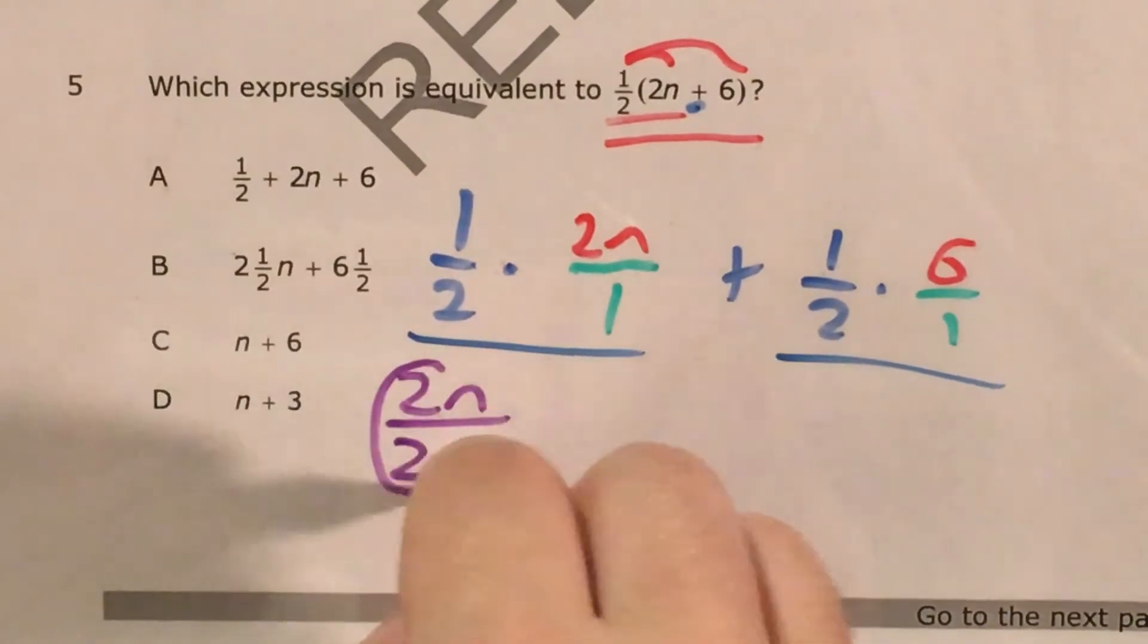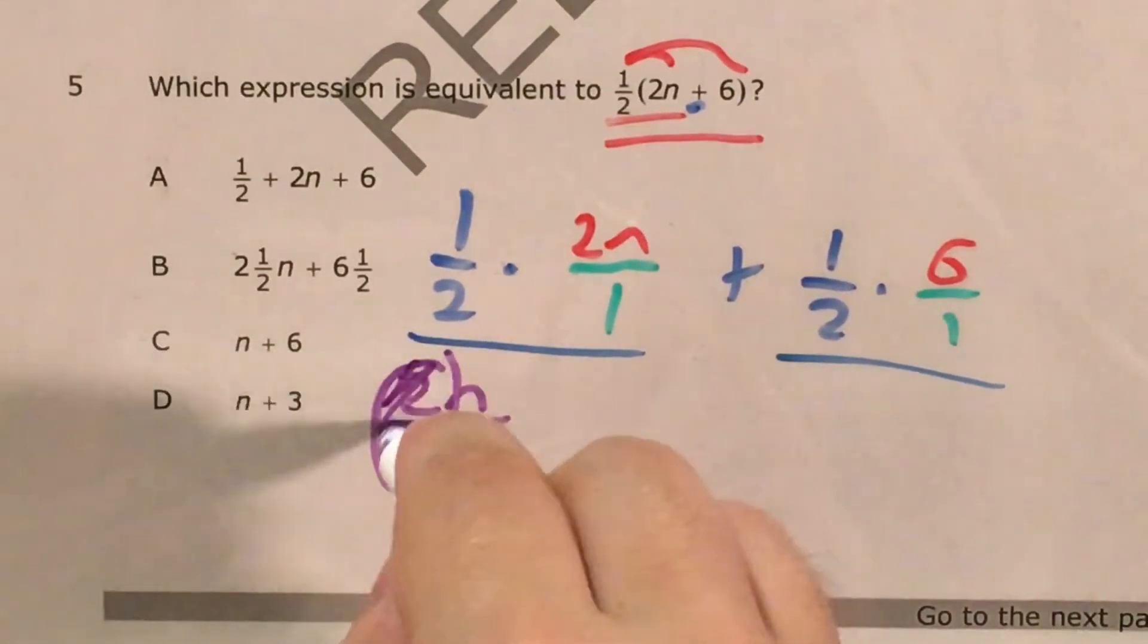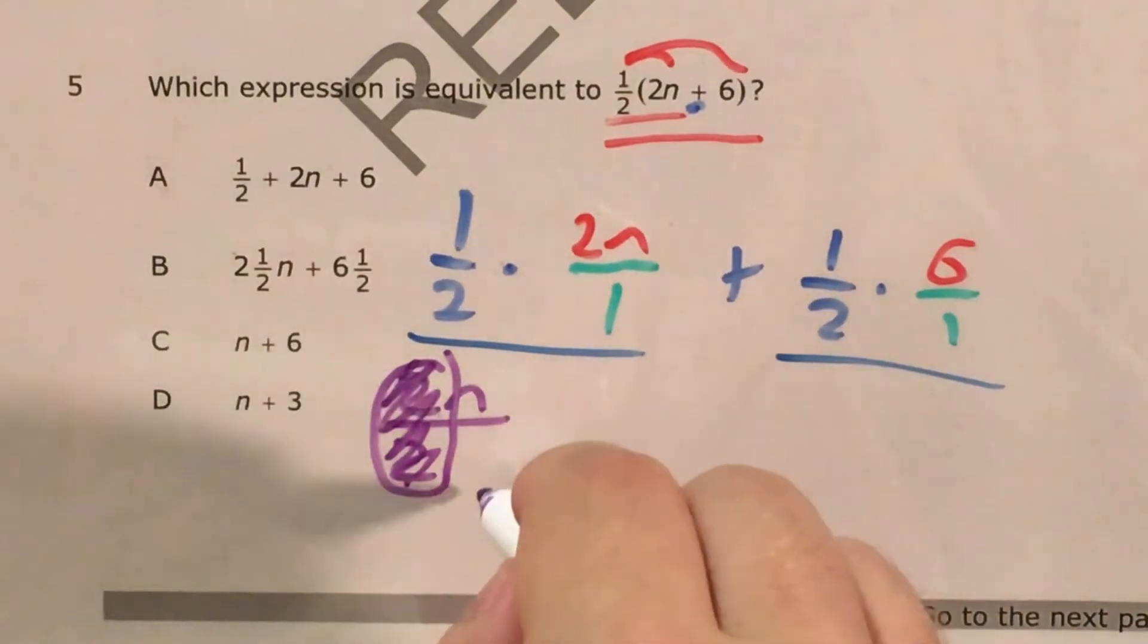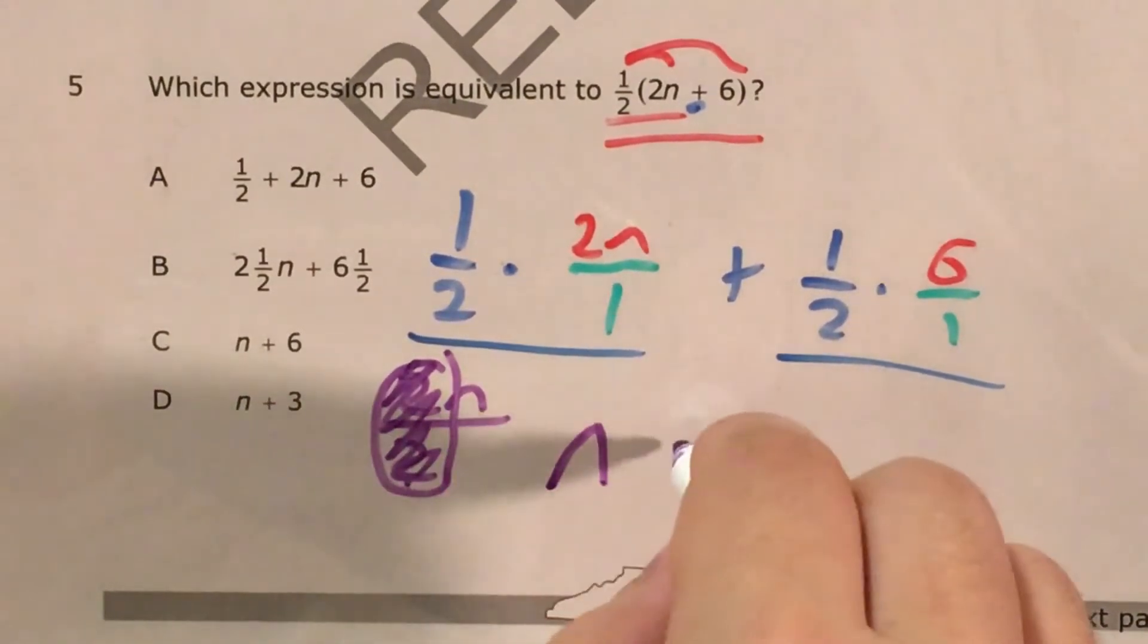Now, 2n divided by 2, I'll go ahead and do this step right now. 2 divided by 2 is just 1, so we can think of that as canceling. And that leaves us with just n.